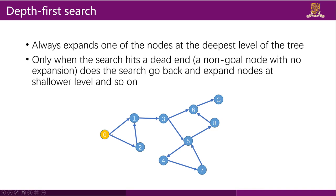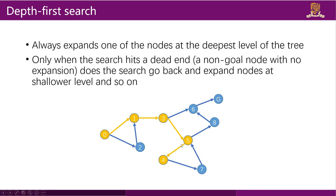Let's look at an example. Start from node 0, which has two children: node 1 and node 2. We assume we always choose the node with the lower index, so we go to node 1. Node 1 has a child node 3, so we ignore node 2 and go directly to node 3 — always expanding the node at the deepest level. From node 3 we similarly reach node 5, then node 4, then node 7.